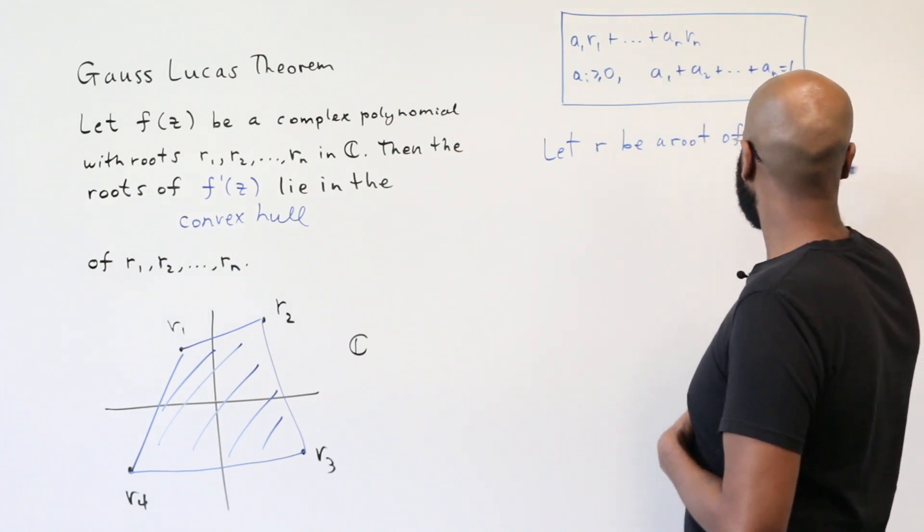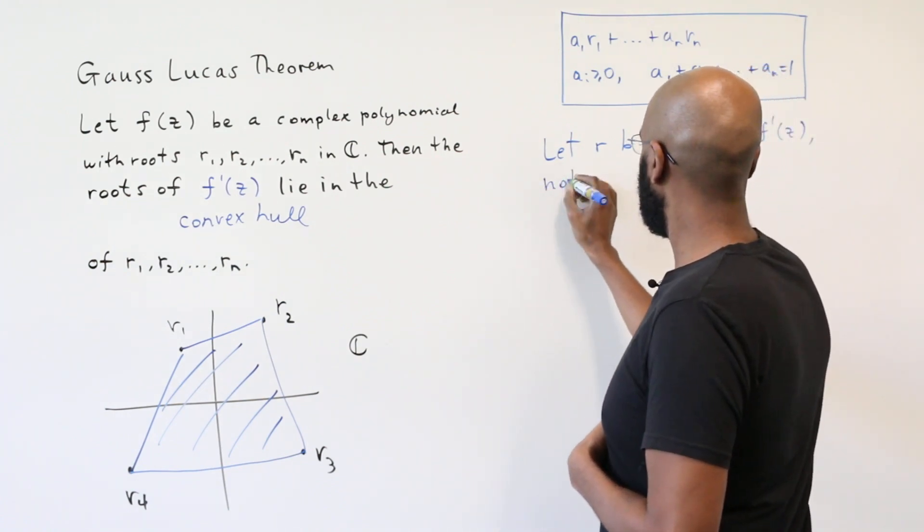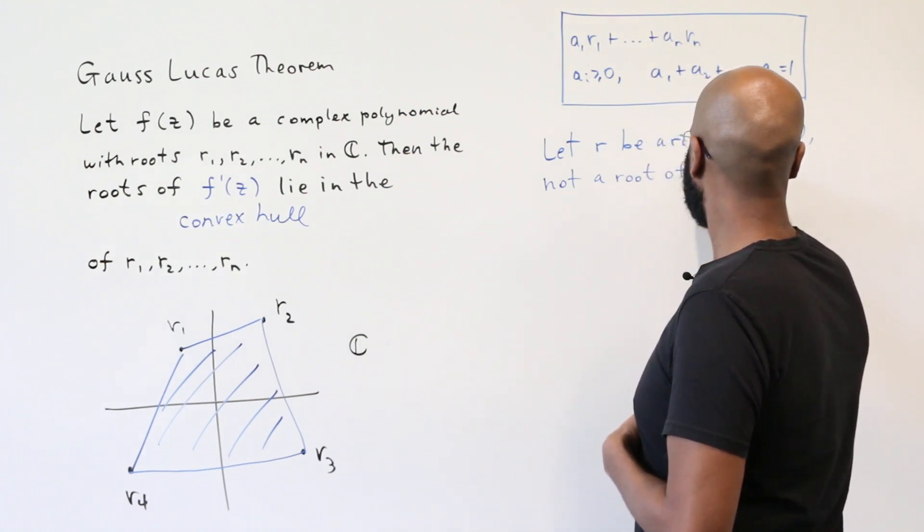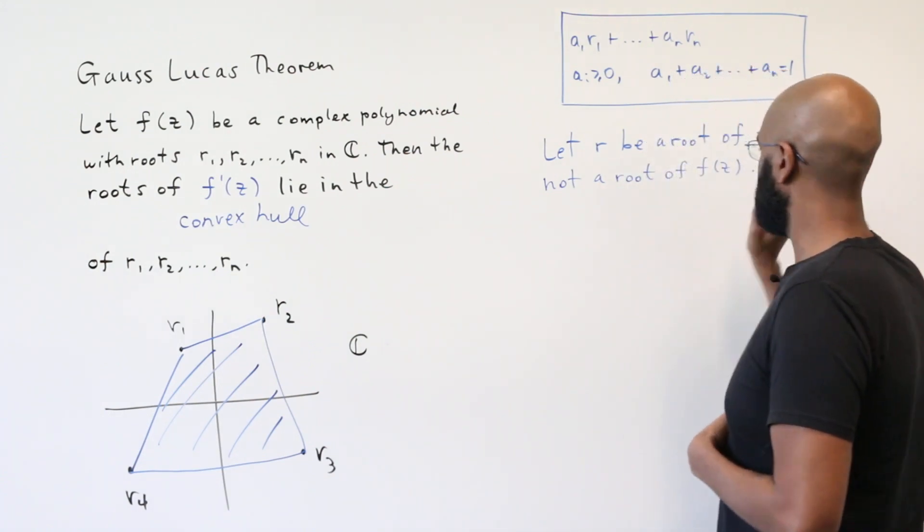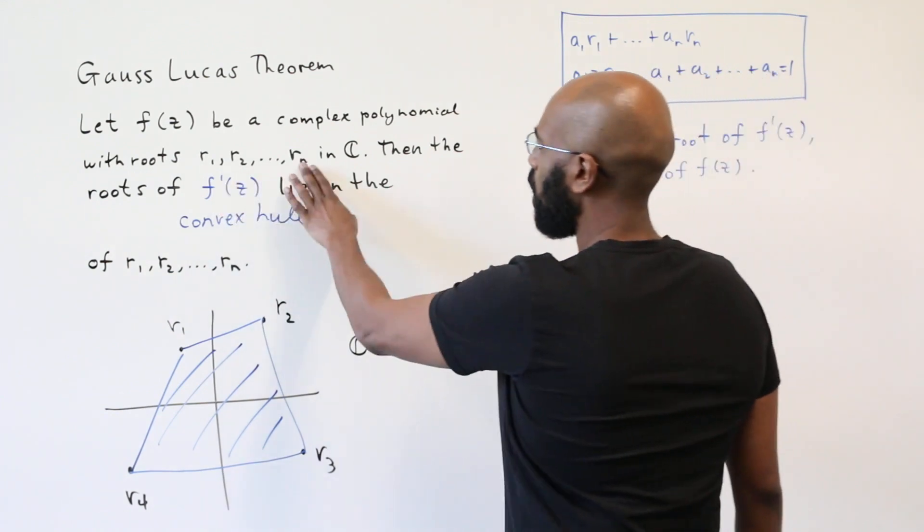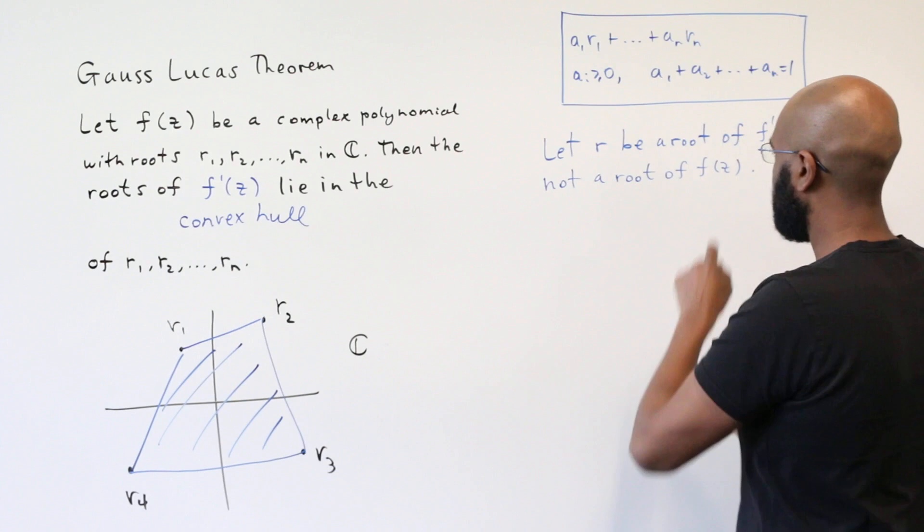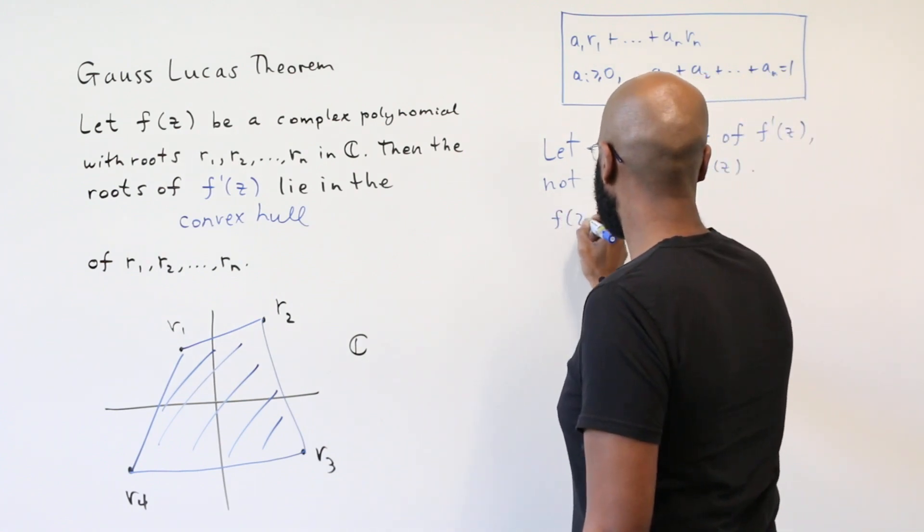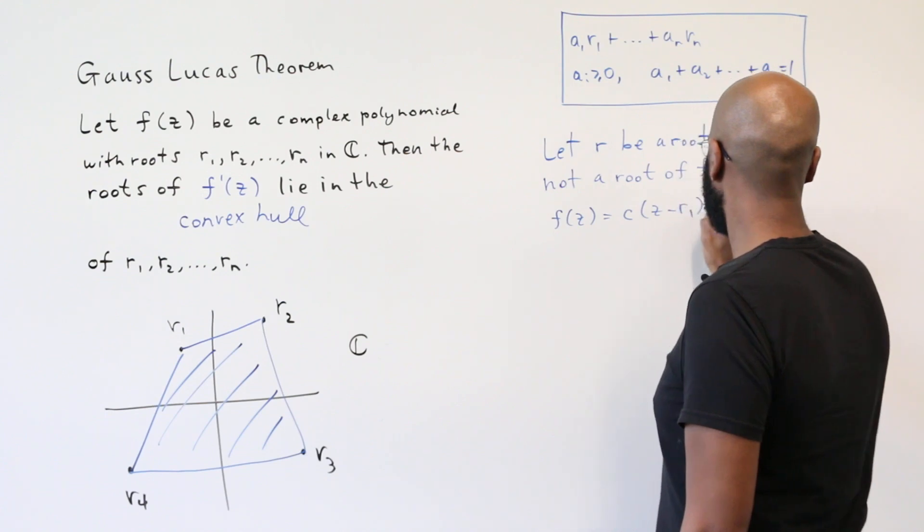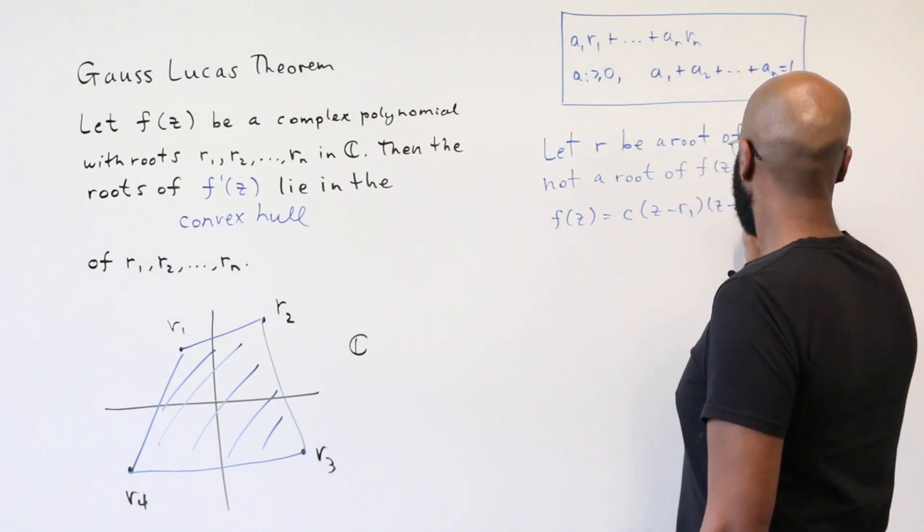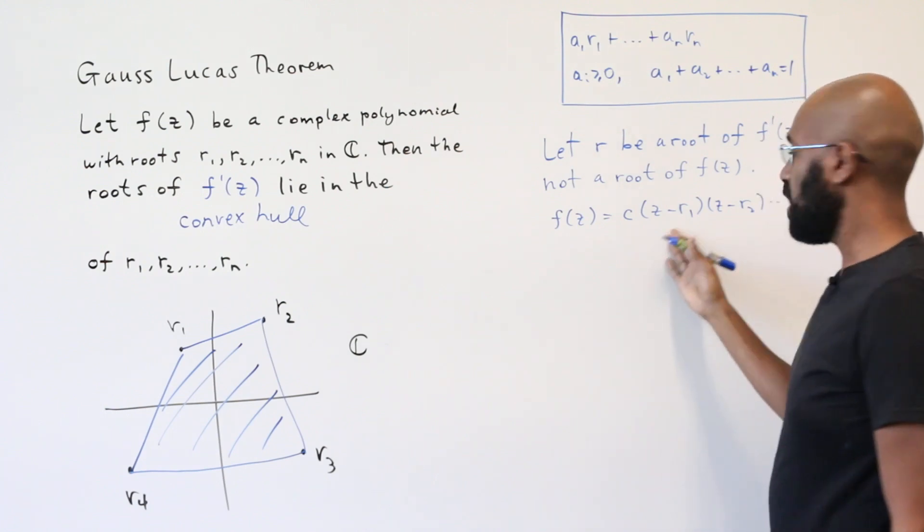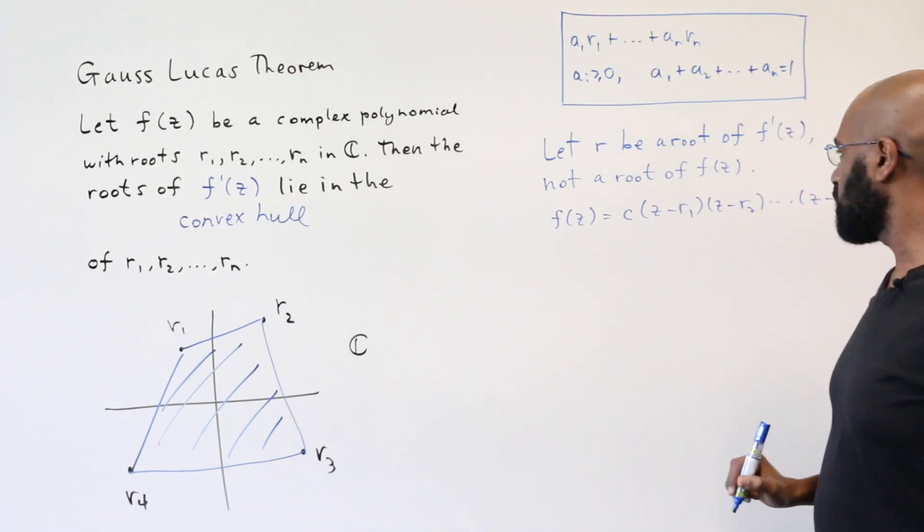So we'll let r be a root of f prime and not a root of f, since we've taken care of that situation already. Since r1 through rn are the complex roots of f, then f factors as some scalar times all these linear polynomials that are z minus any of these given roots, all multiplied.